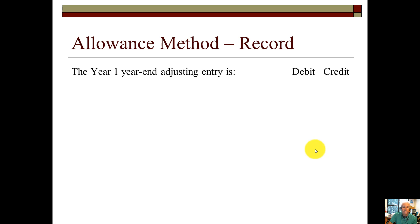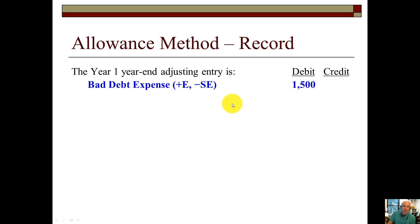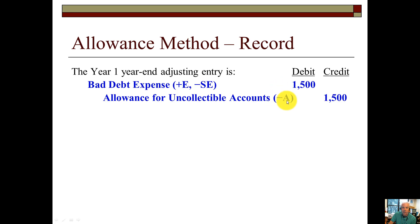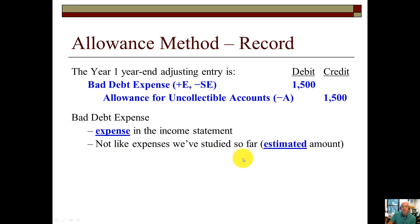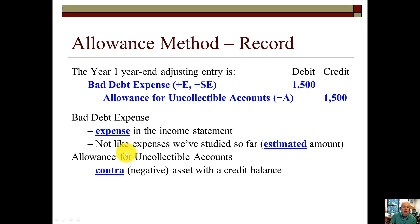So how do we record the year one adjusting entry? We're going to debit bad debt expense for $1,500 and credit the contra asset account — allowance for uncollectable accounts — for $1,500, which carries a negative sign because it's a contra asset. Bad debt expense is reported on the income statement. It's different from other expenses we've studied because it's an estimated amount, unlike paying cash for inventory, utility bills, or salaries. The allowance for uncollectable accounts is a contra negative asset with a credit balance.